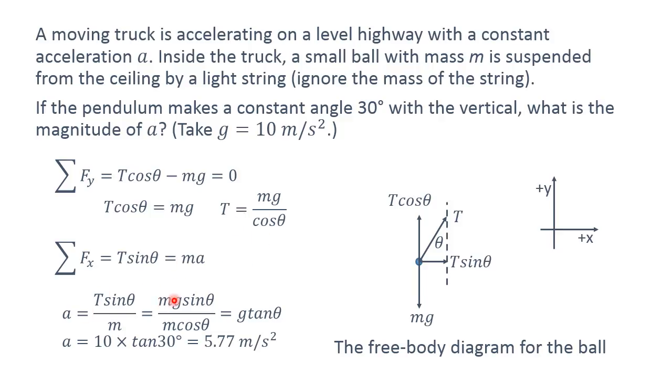So you get mg divided by cosine theta. And the original term of sine theta and m remains. Here both m can be canceled. And you are left with g multiplied by sine theta divided by cosine theta, which is tangent theta.